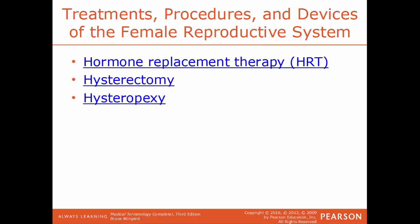HRT, hormone replacement therapy, is when a woman is given hormones artificially because her body no longer makes them in adequate levels — such as estrogen and progesterone in postmenopausal women. By taking an artificial source of these hormones, it helps treat problems caused by their deficiency.